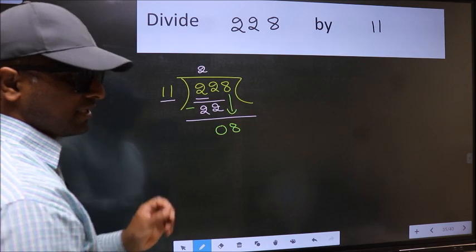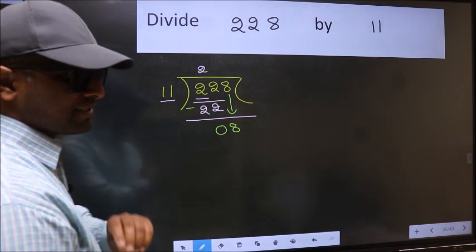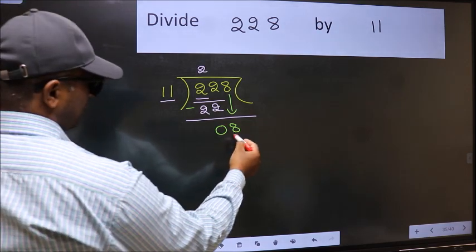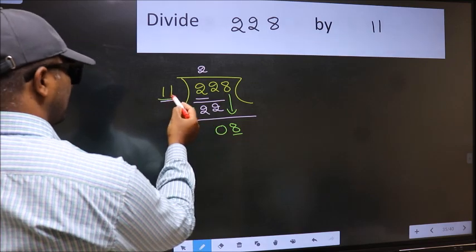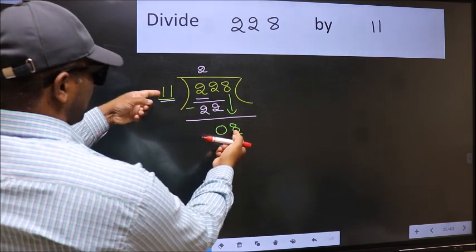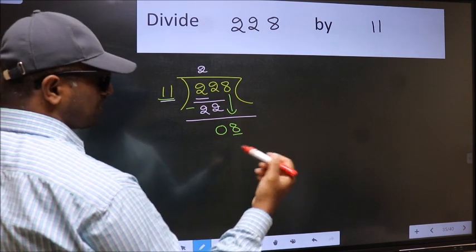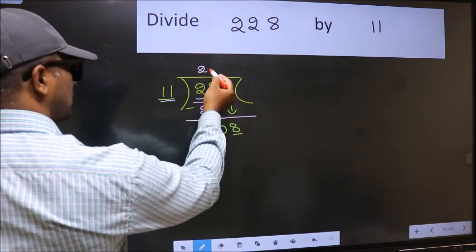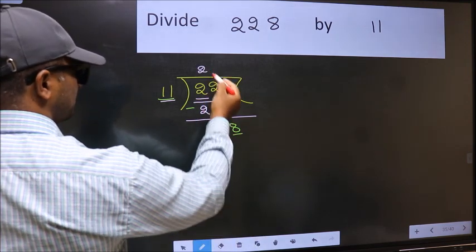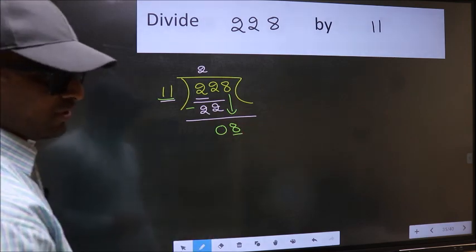After this step, the mistake happens. And the mistake is this. Here we have 8. And here 11. 8 is smaller than 11. So what many do is they directly put dot and take 0. Which is wrong.